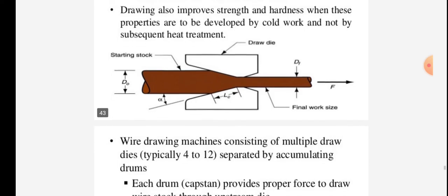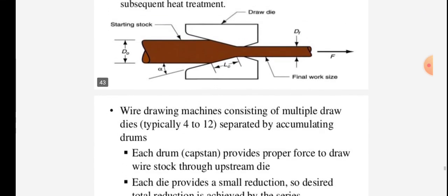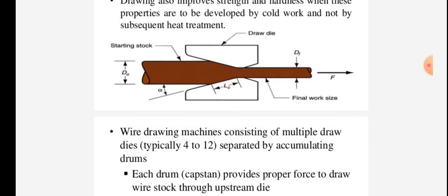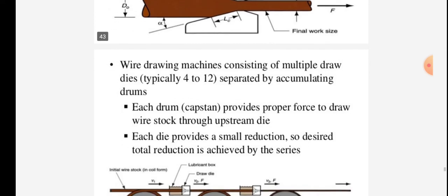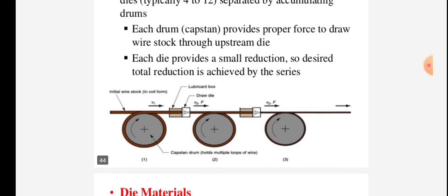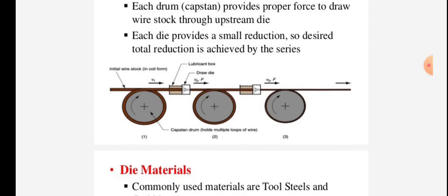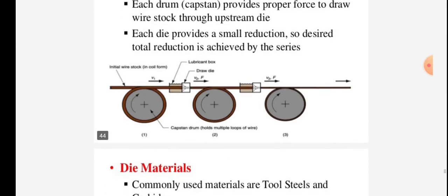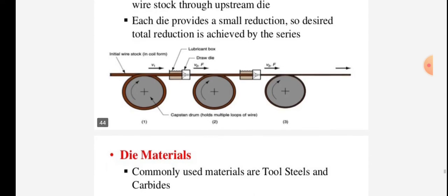As shown in figure, wire drawing machines consist of multiple draw dies, typically 4 to 12, separated by accumulating drums. Each drum or capstan provides proper force to draw wire stock through the upstream die. Each die provides a small reduction, so the desired total reduction is achieved by the series.